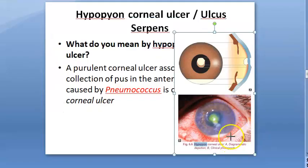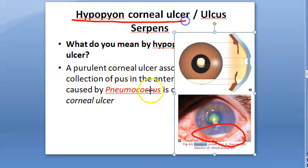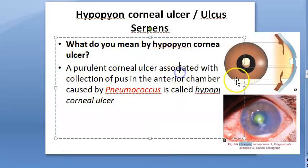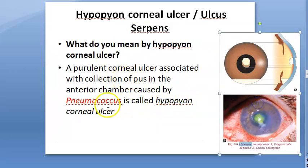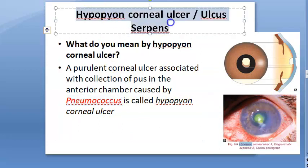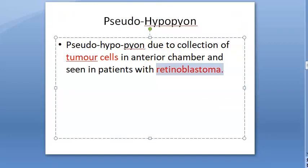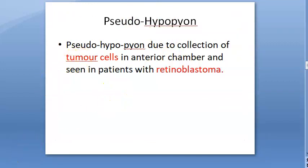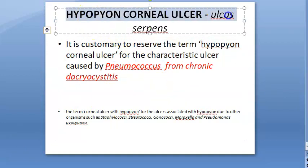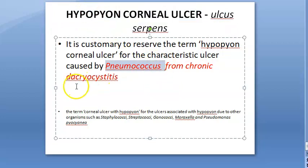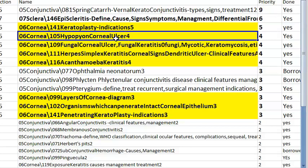Hypopyon corneal ulcer (ulcus serpens): pus in the anterior chamber, caused by pneumococcus. Pseudohypopyon occurs when tumor cells (e.g., retinoblastoma) deposit in the anterior chamber. The pneumococcus in hypopyon corneal ulcer comes from chronic dacryocystitis. Bacterial hypopyon moves when you tilt the head and is sterile (bacteria not exactly in the hypopyon).